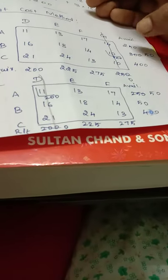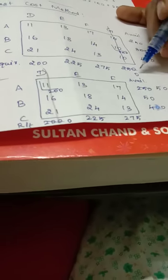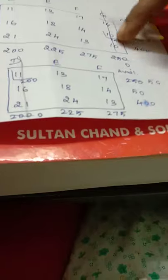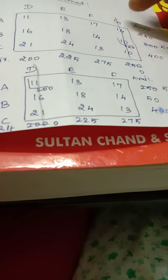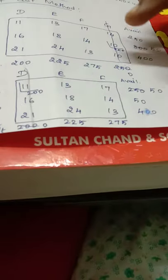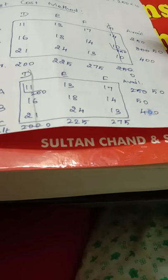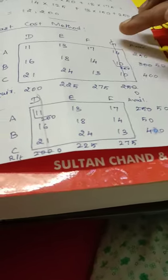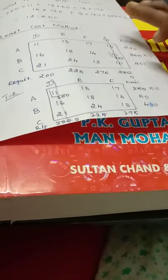Once an element is fixed, we subtract that fixed value from both availability and requirement. So 250 subtracted means availability becomes 50 and requirement becomes 0. In destination G all requirements are satisfied, so no more requirement is possible for G. Therefore G destination should be deleted — the column with value 0 is deleted. So G column is deleted and we move to the second table.